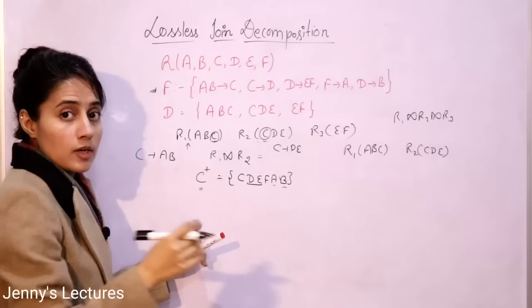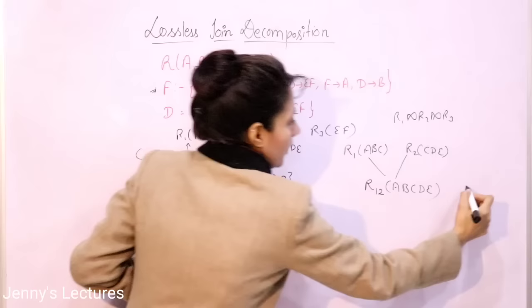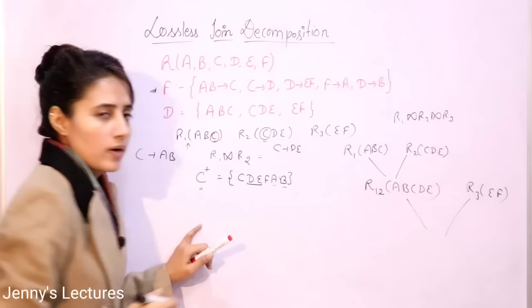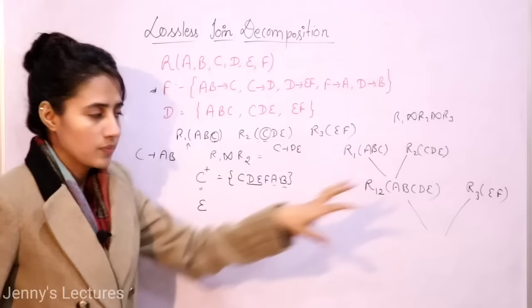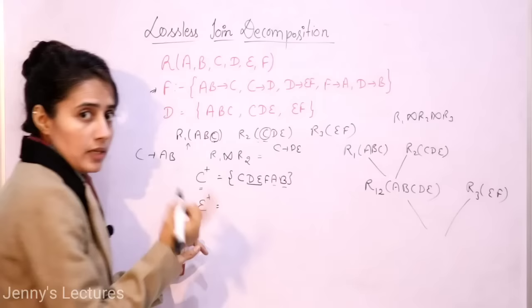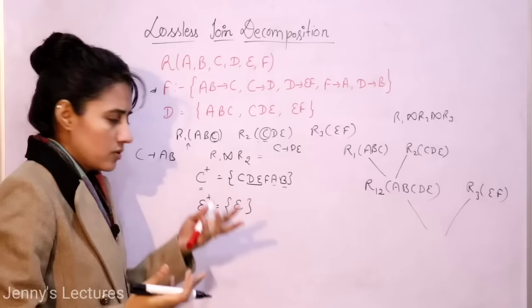Denote R1 natural join R2 as R12, which contains attributes A, B, C, D, E. Now we need to natural join R12 with R3. Check for a common attribute between R12 and R3 — yes, E is common. So now check whether E is a candidate key for R12 or R3. Find the closure of E using the functional dependency set.